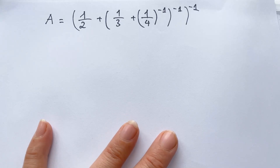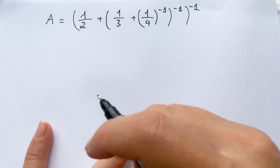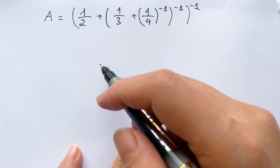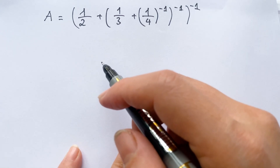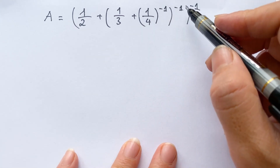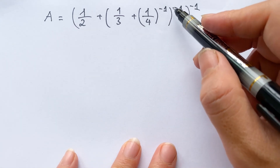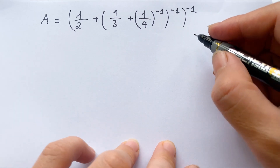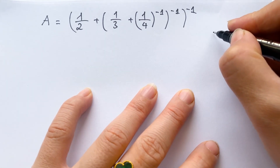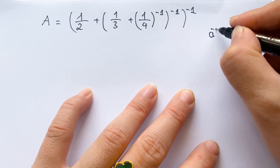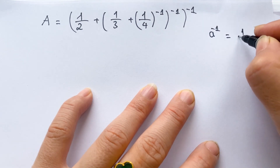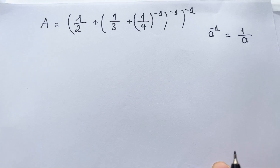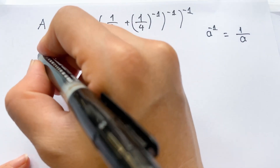Hello everyone. How to simplify the expression — in this case everyone can see the numbers have powers of minus one. We need to apply the property: a to the power minus one equals one over a.